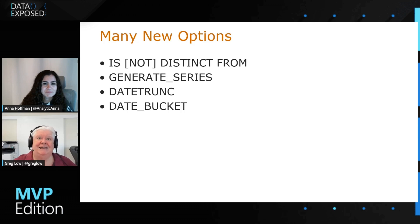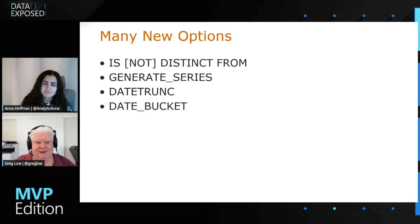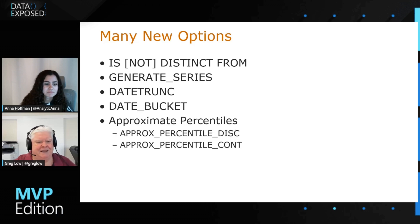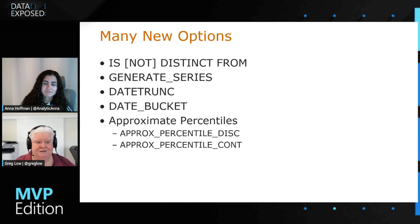DATE_BUCKET allows you to take date values and sort of put them into buckets for analysis — another thing that's super popular. If I said I'd like to break all of these transactions into two-hour chunks where the chunks start at 15 minutes past the hour, this is the sort of thing it can do. We've also had approximate functions added recently. Back a few versions ago they added approximate distinct counts — drastically faster than doing the actual calculation. Now we have those for percentiles: percentile discrete and continuous now have approximate options that are radically faster.